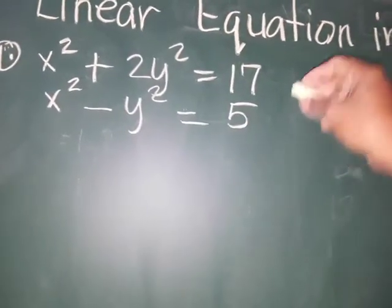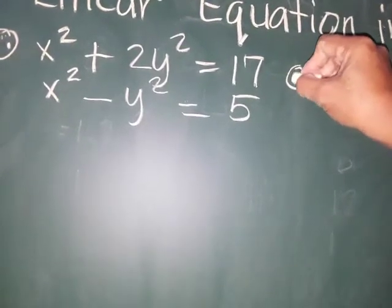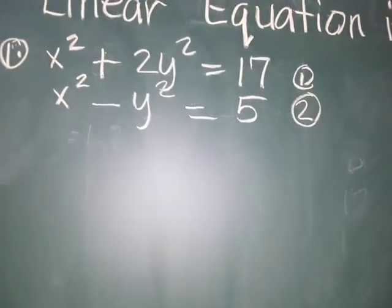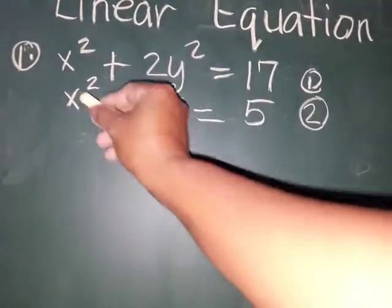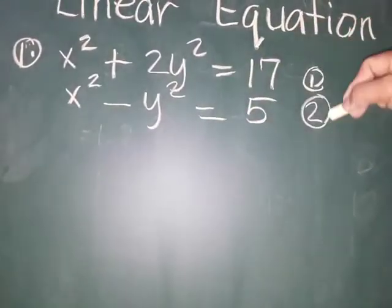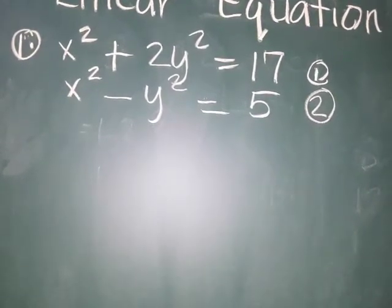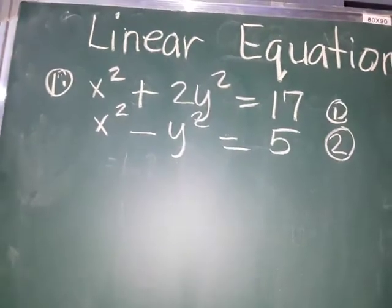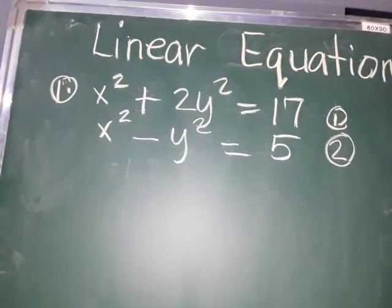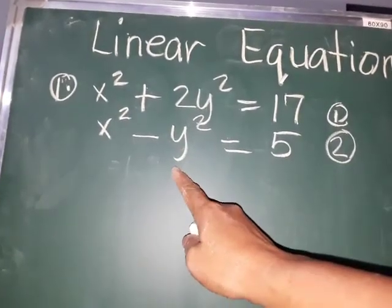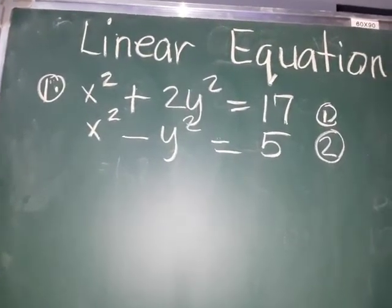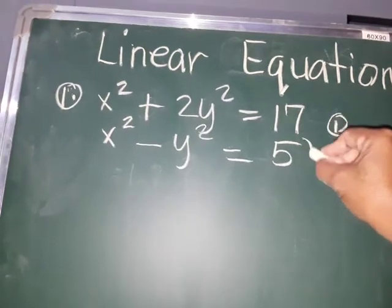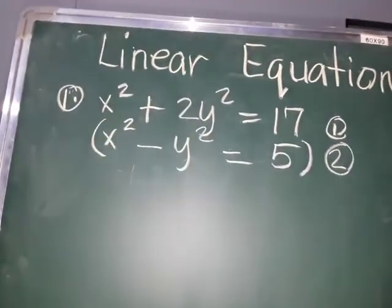We're going to name the first one as equation 1, and the second as equation 2. Next, look for any of these terms in the first equation and the second equation — which one is easiest to cancel? When we say elimination, it's more on cancellation — we remove x or we remove y. I will choose equation number 2 and multiply it by 2.